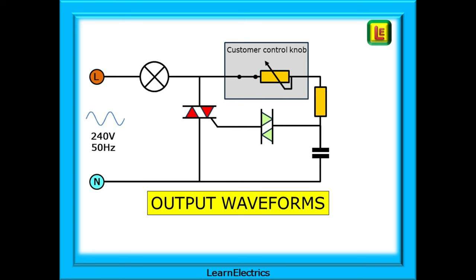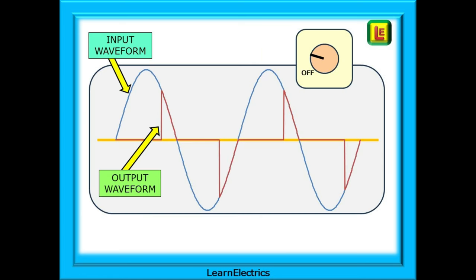The output waveforms then are going to be chopped versions of the smooth AC input voltage, and it is this chopping that determines the overall brightness of the dimmed light. With the control knob turned on by only a small amount, we would expect the lamp to be just about glowing, just visible. You can see on this drawing how the output waveform is a chopped version of the input voltage. The TRIAC is only being triggered towards the end of each half cycle, and this minimizes the amount of current that passes through the lamp.